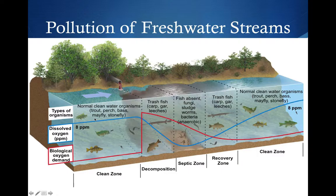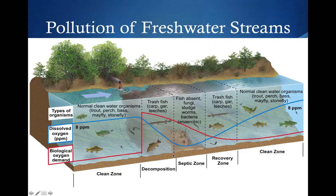We then enter a zone of decomposition where only certain types of organisms can survive. In clean water on the left, we find normal organisms — trout, perch, bass, mayflies, and stoneflies. The mayfly and stonefly larvae are specifically what you'd look for in a biodiversity index to assess how healthy a stream is. In the decomposition zone, we find only trash fish — organisms able to live in lower oxygen and polluted water, like carp and leeches.